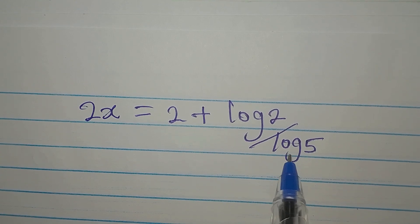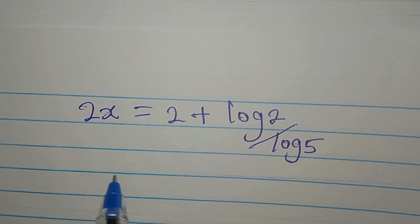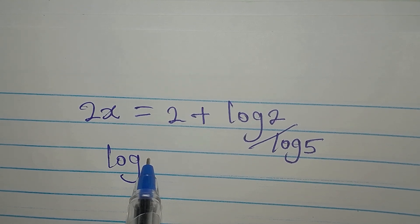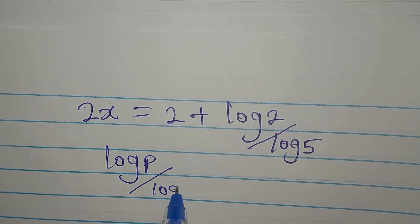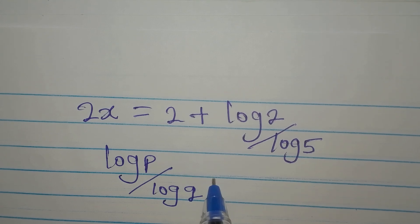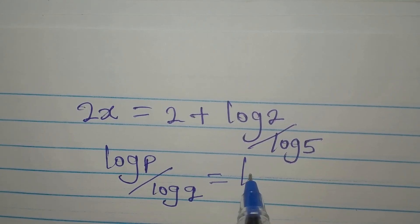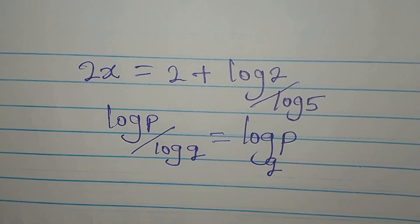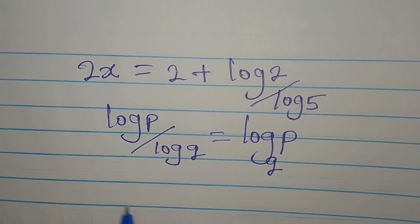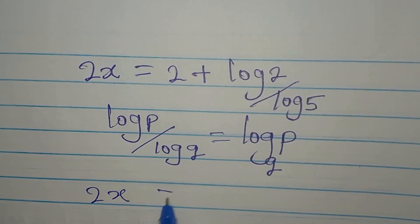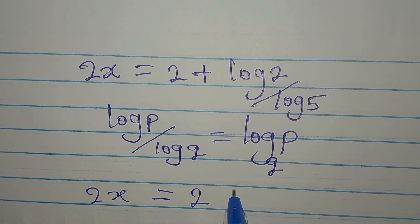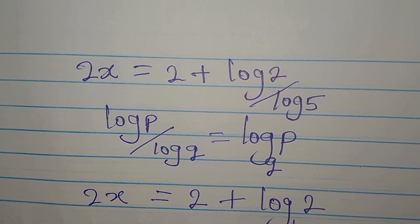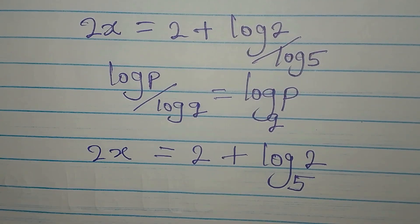From here we apply the change of base rule: if you have log p over log q, it is the same as log p to base q. Applying this, we now have 2x equals 2 plus log 2 to base 5.